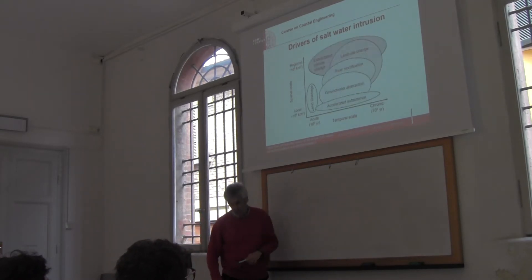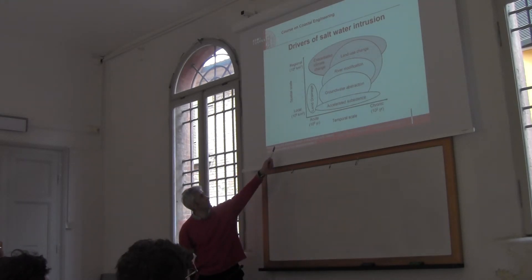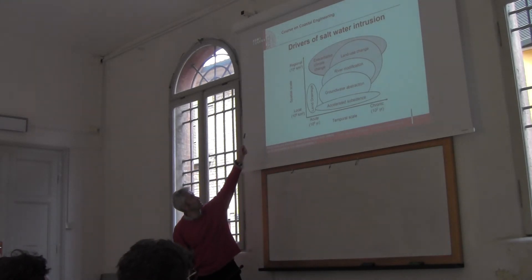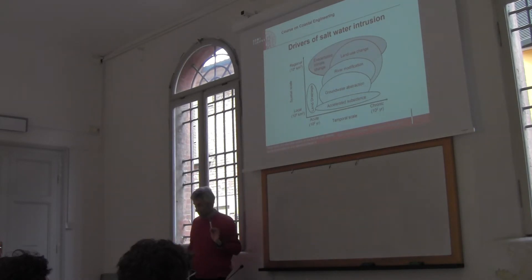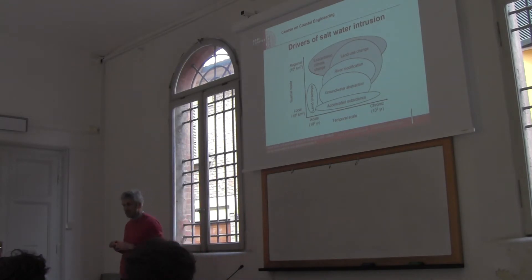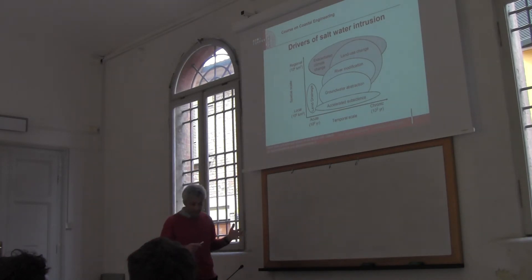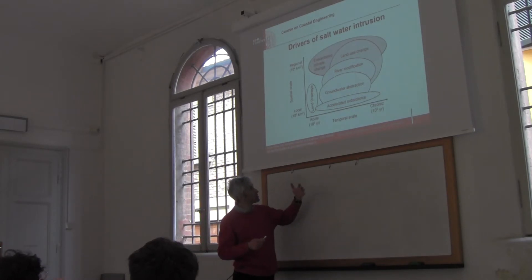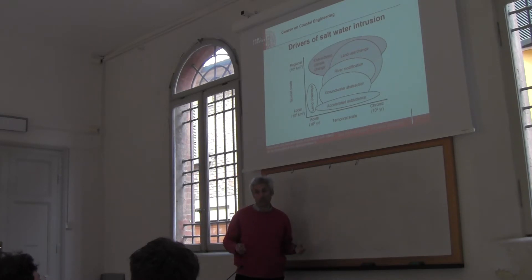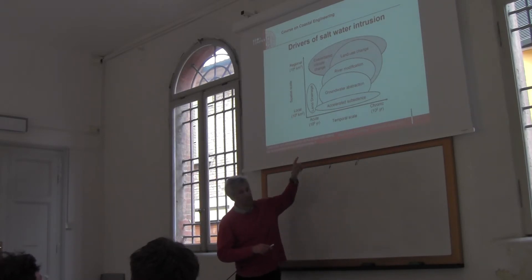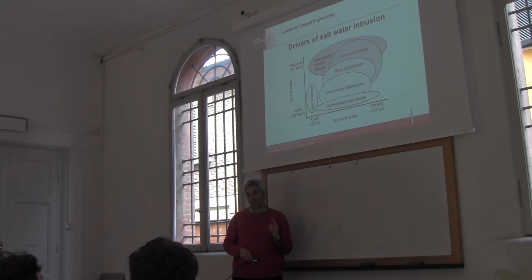Now let's look at the other picture. Look at the scale — local, one kilometer square, regional. At the local scale, you have drivers that are more related to anthropogenic activity. The connection is more evident, like accelerated subsidence — accelerated by withdrawal of oil and gas from the subsurface or water withdrawal. And then there is groundwater extraction. This is an extremely important driver of saltwater intrusion.